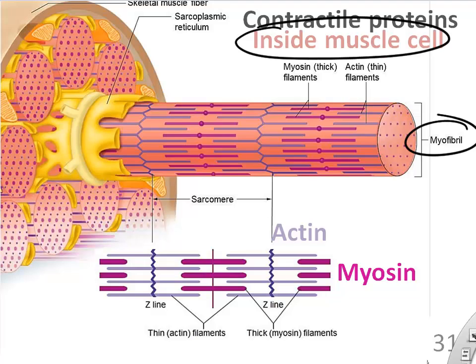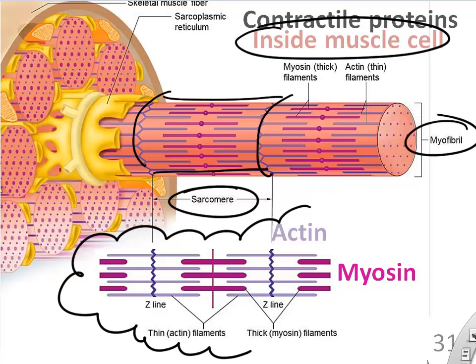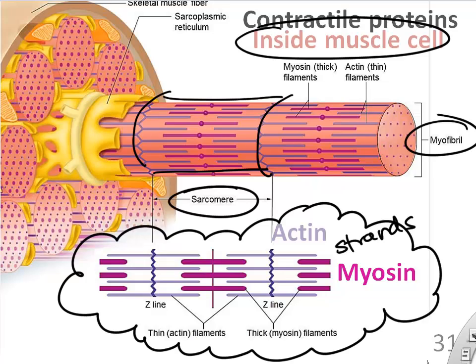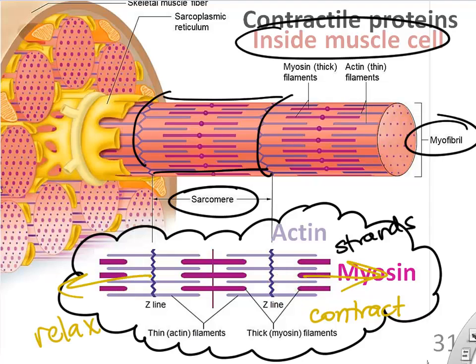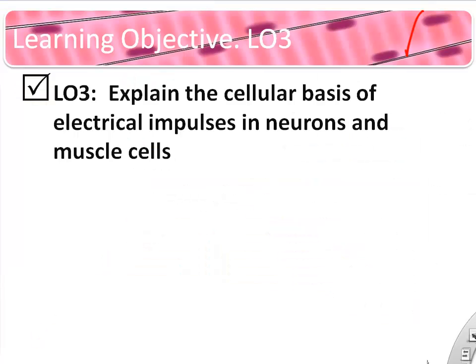These textbook drawings show a myofibril made up of sarcomeres. The sarcomere is basically made up of actin and myosin filaments or strands. Those contract and relax, and that causes your entire muscle to contract and relax.